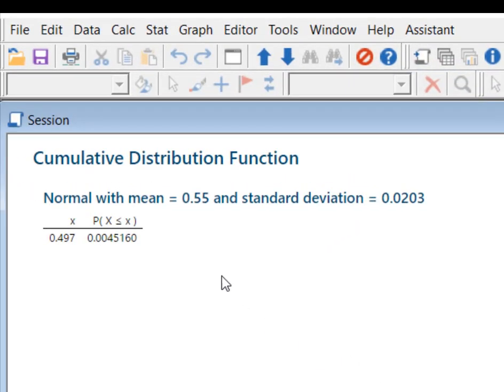Minitab thinks for just a second and it tells you that the probability of finding a sample proportion less than 0.497 is 0.0045160. I think I probably just round that to four decimal places. I think they went seven or eight, and that's probably more than you need.